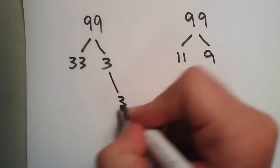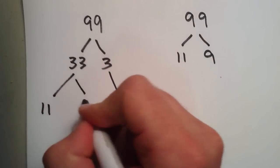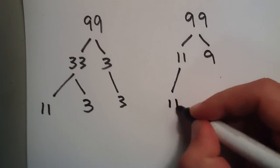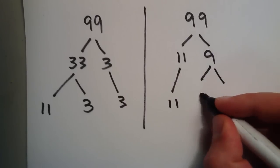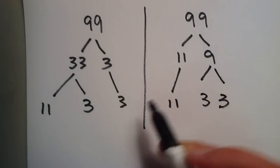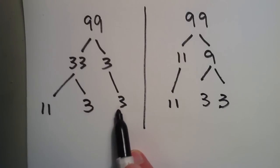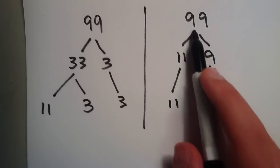11 is prime, we'll bring that down. 9 can be broken apart into 3 times 3. So we factored it two different ways and we ended up with the same results. 11 times 3 times 3 equals 99. 11 times 3 times 3 equals 99.